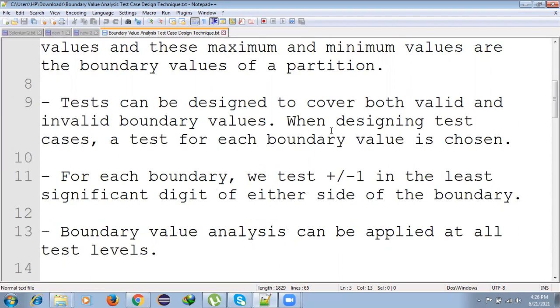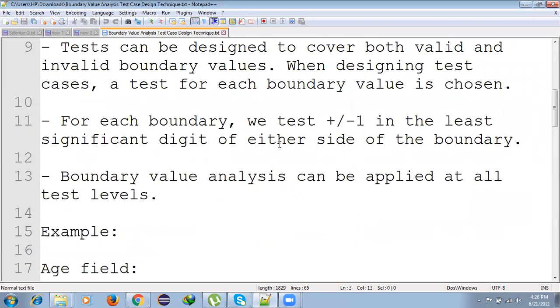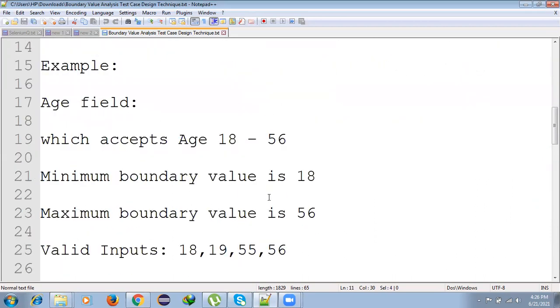Tests can be designed to cover both valid and invalid boundary values. Every testing needs to cover valid and invalid based on the boundary value chosen. Each boundary value can be tested using plus or minus one. We can use plus or minus one at least one significant digit of each set of boundary values. This boundary value analysis can be applied at all test levels.